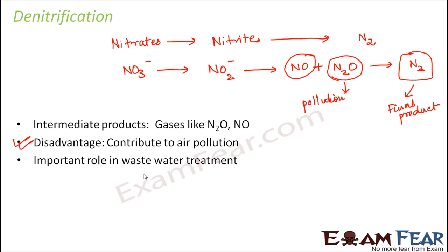However, this process also has an advantage — it plays an important role in wastewater treatment. In wastewater there are large amounts of nitrates present, and by this process the unwanted nitrates are removed from wastewater. Therefore, it reduces the chances of algal blooms. Due to excess presence of nutrients like nitrates or phosphates, algal blooms take place. By denitrification, the excess nitrates get converted to atmospheric nitrogen, thereby reducing the possibility of algal blooms. So it helps in wastewater treatment, but on the other hand, the intermediate products add to air pollution.